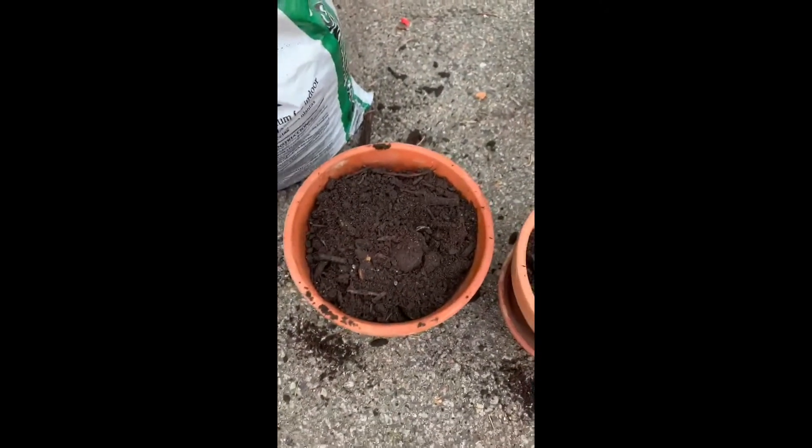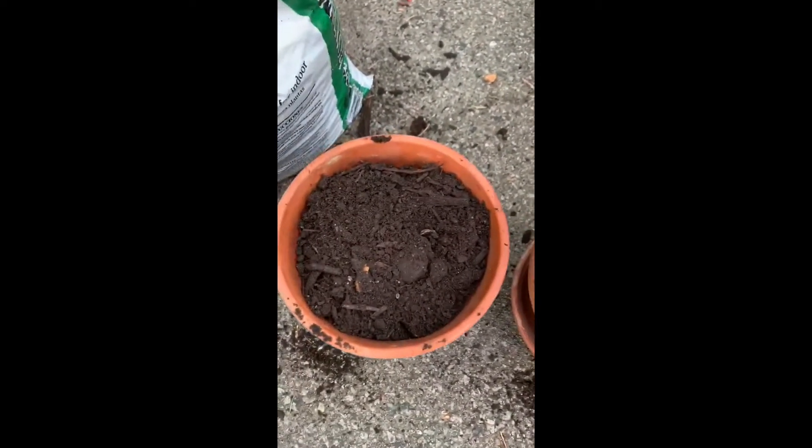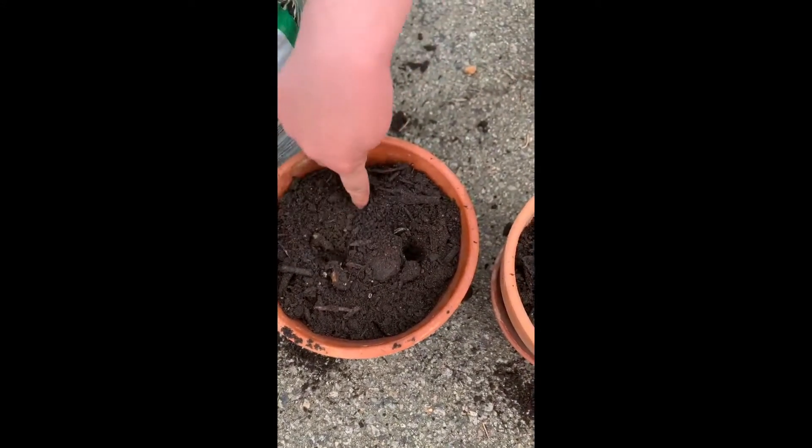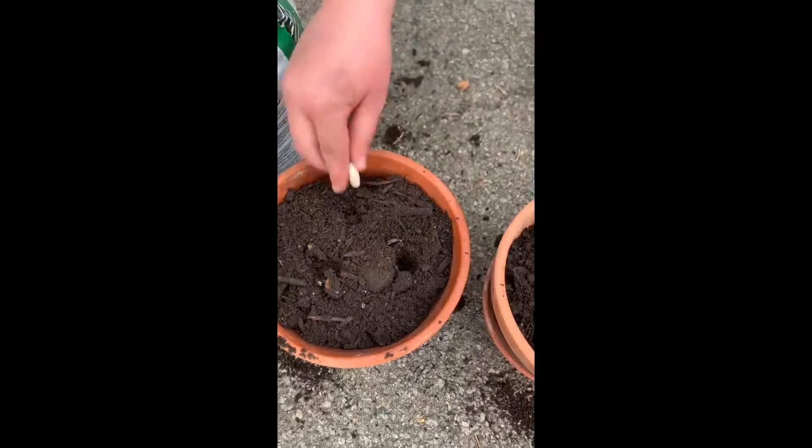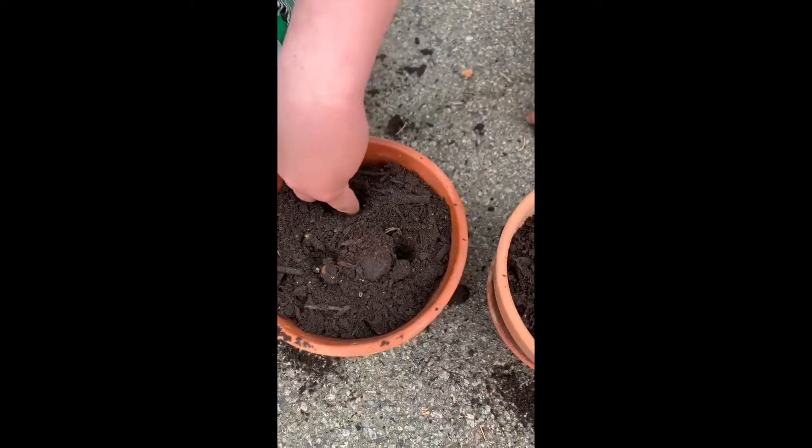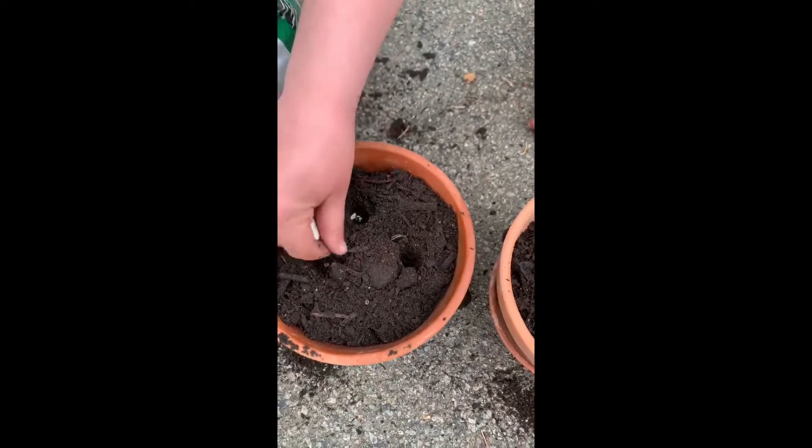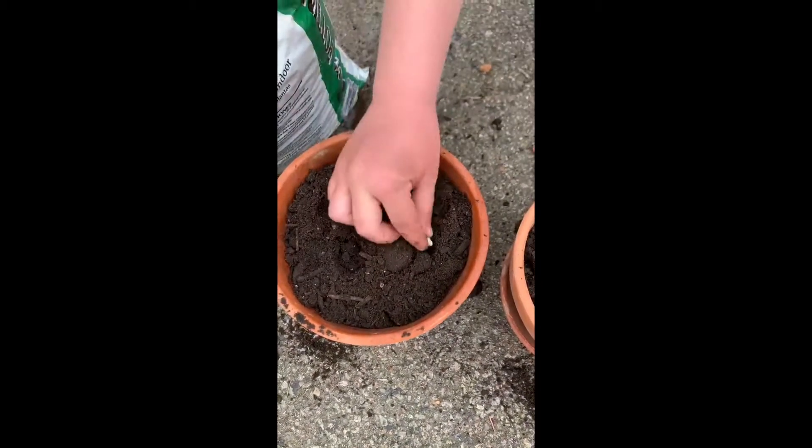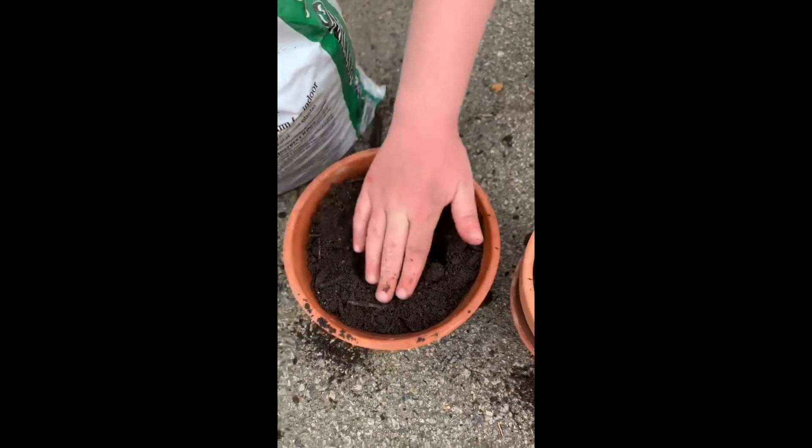First we have dirt and she's gonna stick her finger in and make some holes for the seeds. We're going to put a seed in each hole, push it way down deep. There you go. Another one. Another one. Good. Now we need to cover those up.